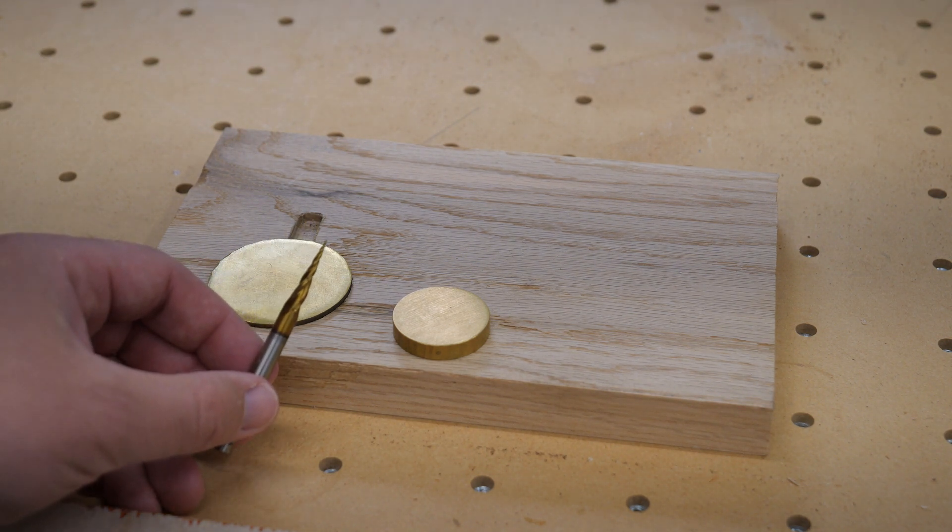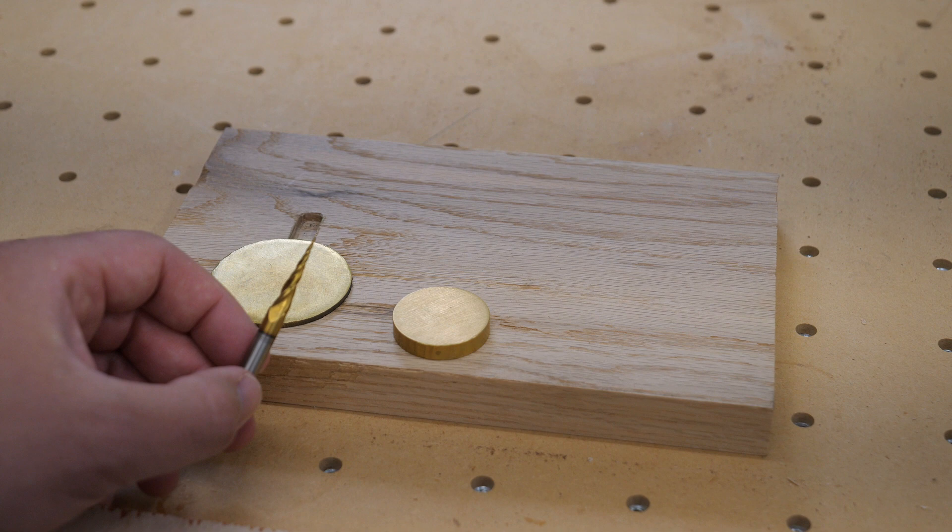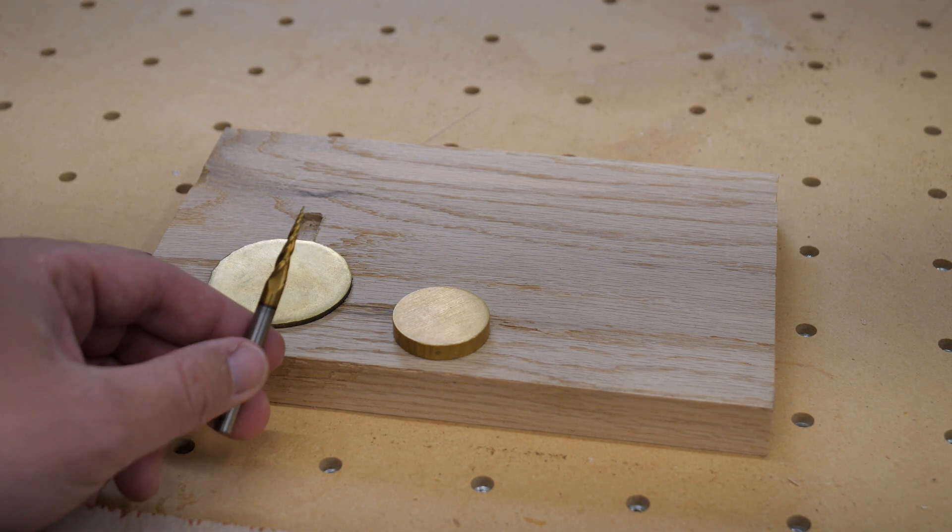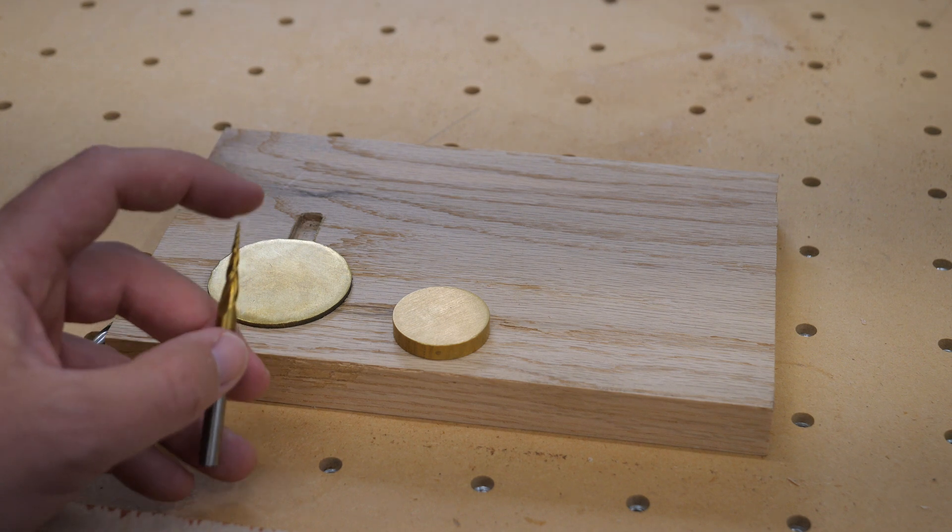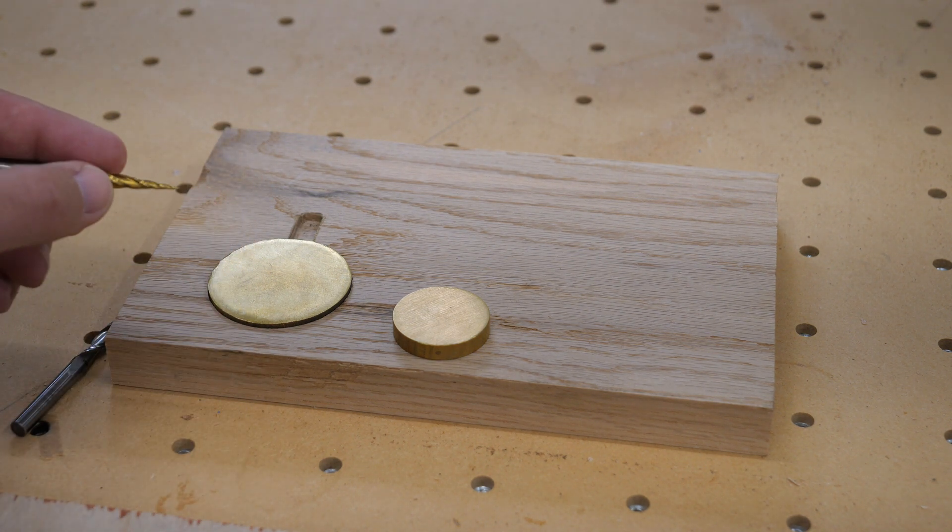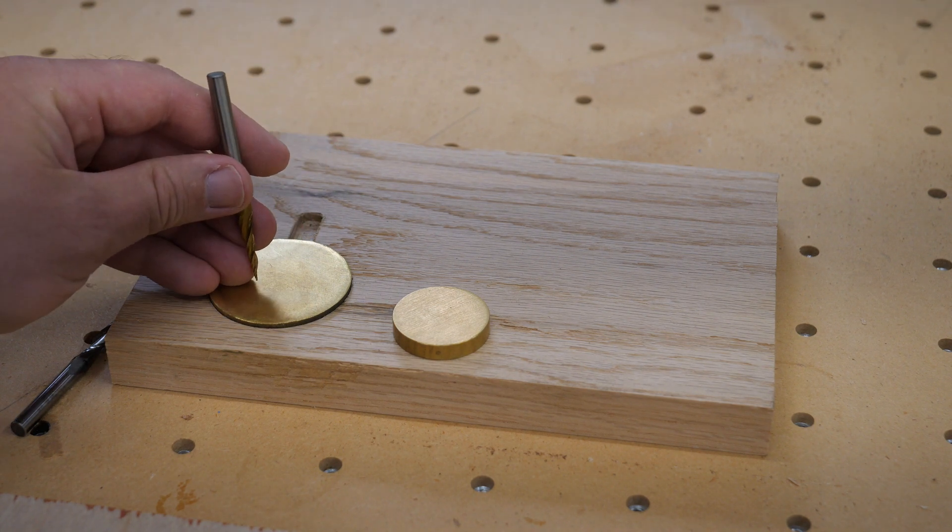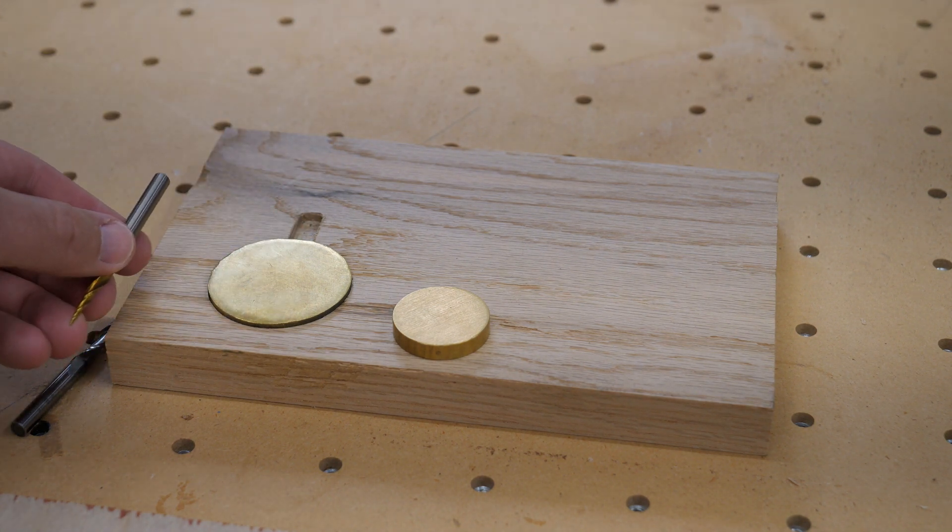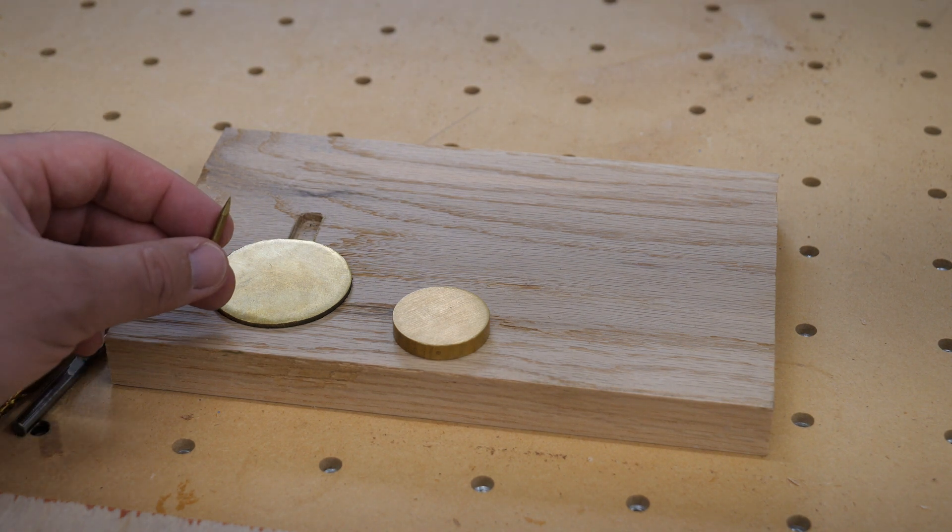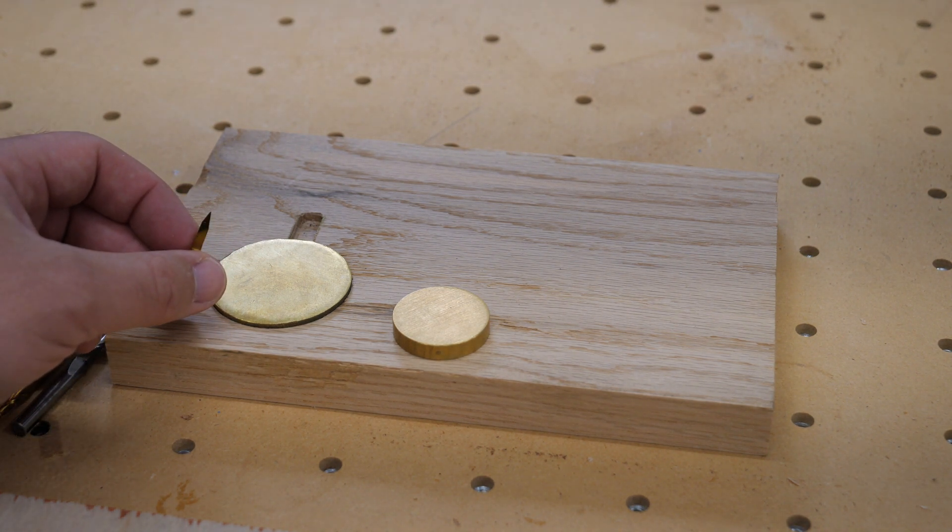The second bit is a tapered bit and I'll put a link in the description to the type of bit and where you can find it. But while it looks like it comes to a point, it actually is flat. And so that'll give you a nice smooth bottom in your cut and that'll take out most of your waste. And then you'll finish with a detailed bit like this one.